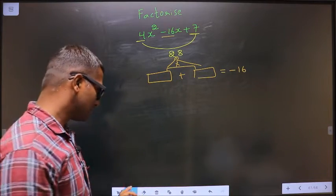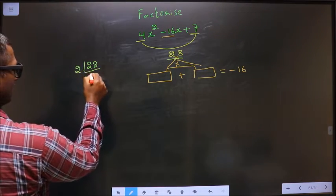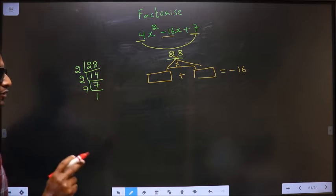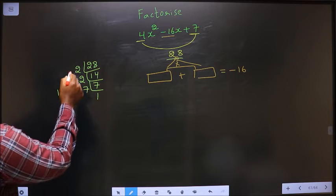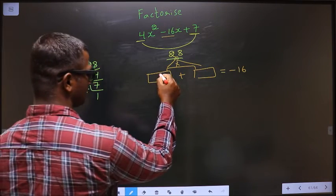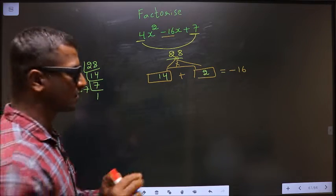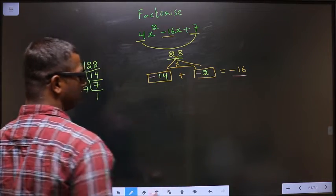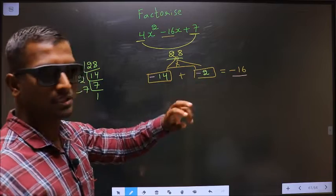To get those 2 numbers, I should take the LCM of 28: 2, 1, 4 — so 2 and 7, giving 7 and 1. The 2 numbers are 7 into 2, which is 14. 14 into 2 is 28, and 14 plus 2 is 16. Now adjust the signs — we need minus 16, so minus 14 minus 2 is minus 16, and minus 14 into minus 2 is plus 28.